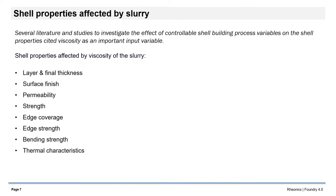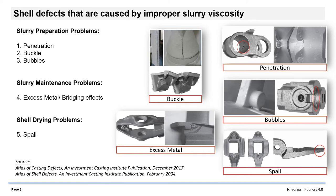Some of the final shell properties that are directly influenced by slurry viscosity are layer and final thickness, surface finish, permeability, strength, edge coverage, edge strength, bending strength and thermal characteristics. Some of the defects that can be caused by improper slurry viscosity are penetration, buckle, bubbles, excess metal, bridging effects and spall.